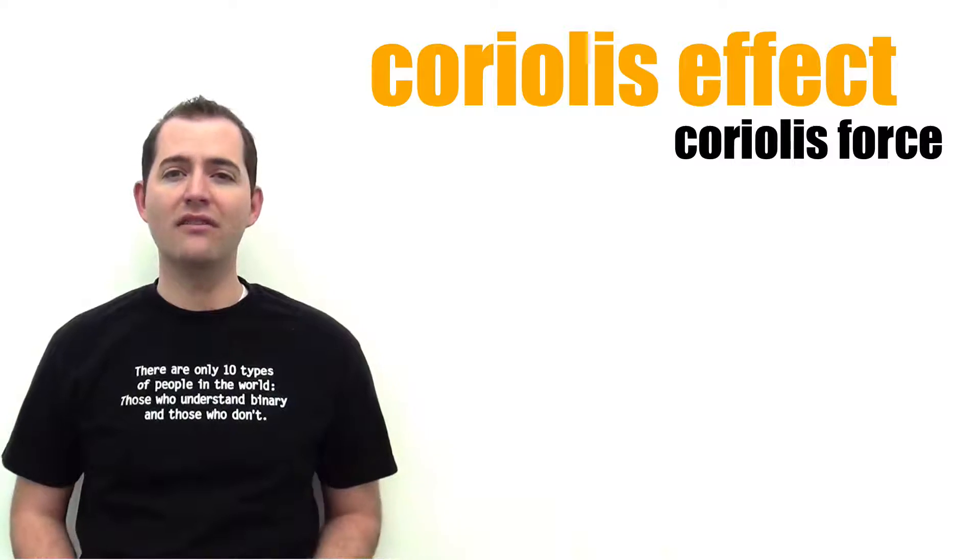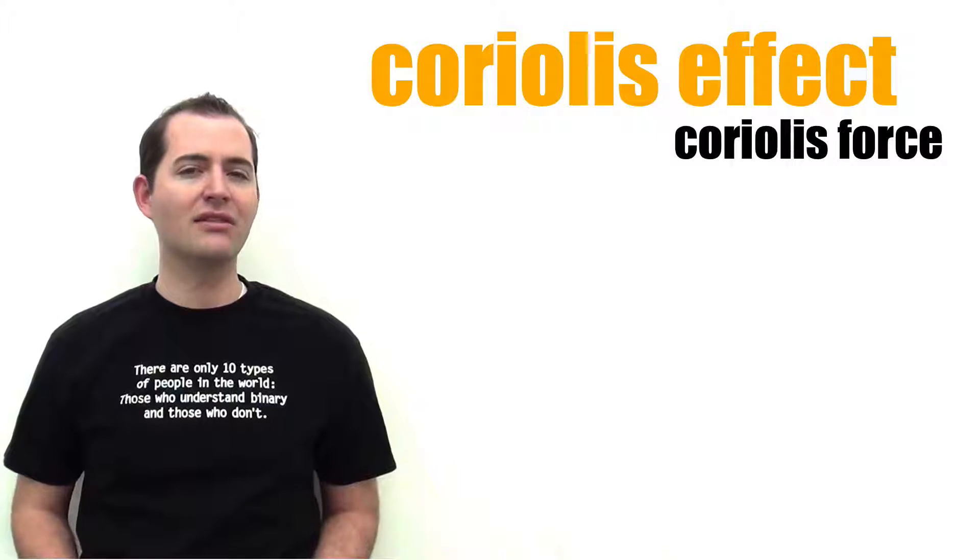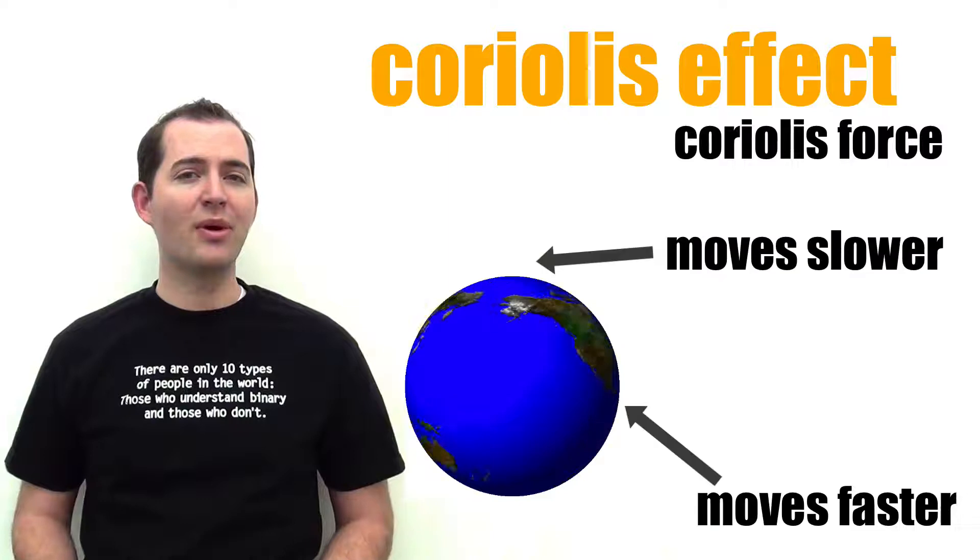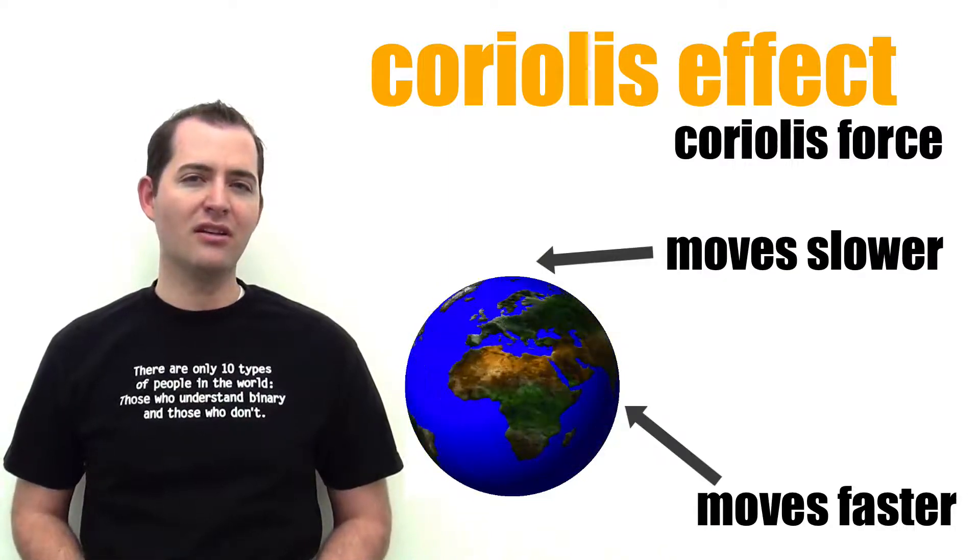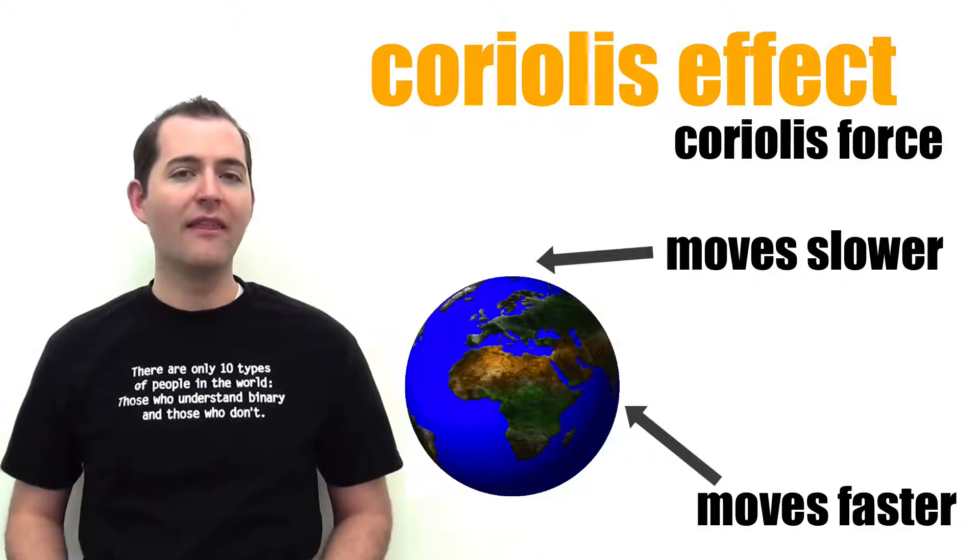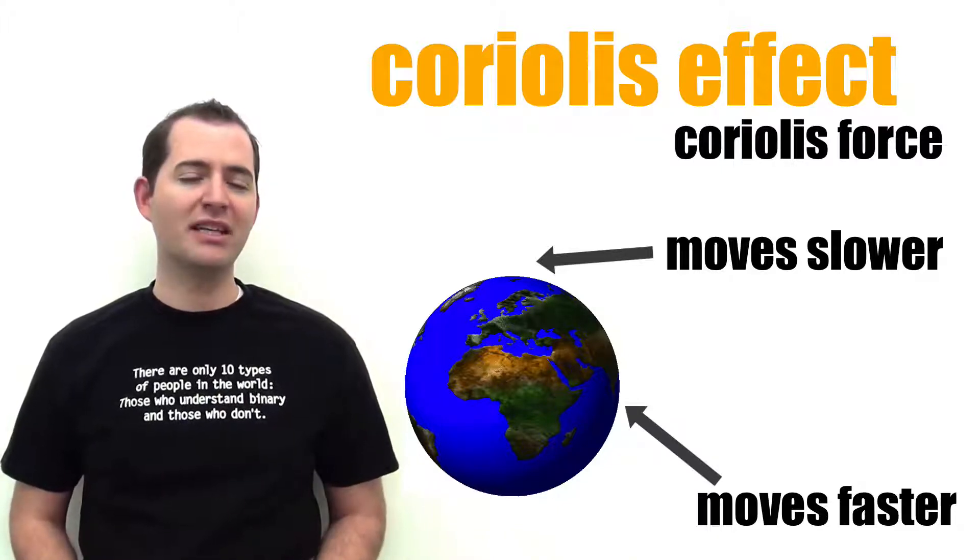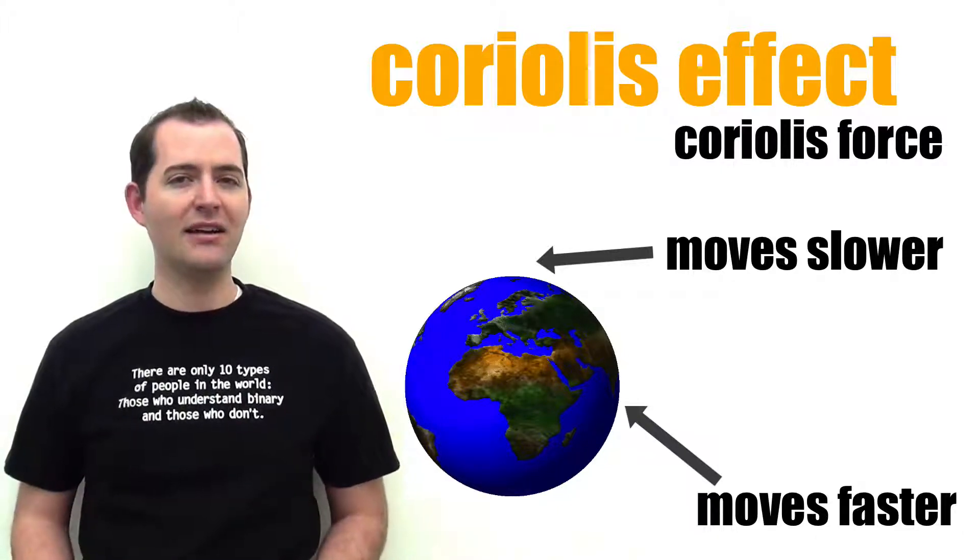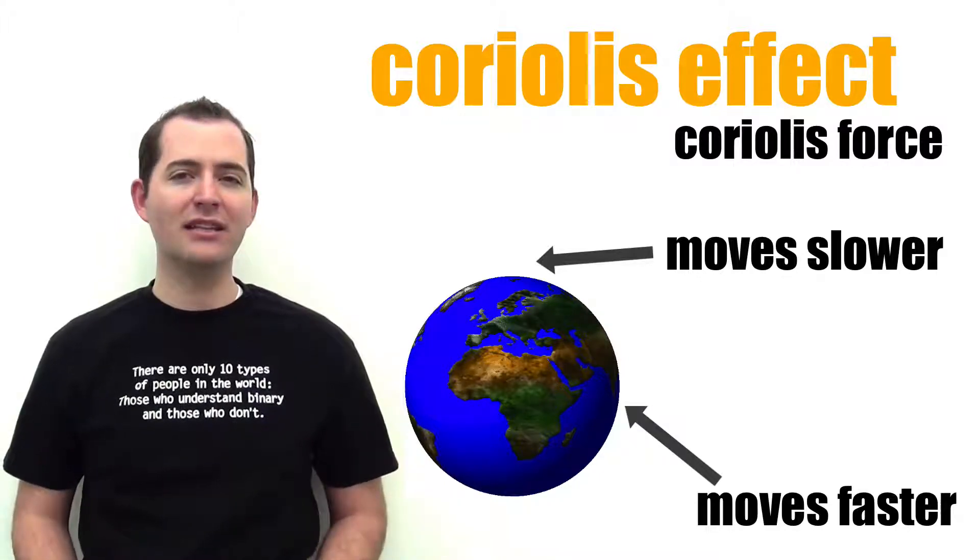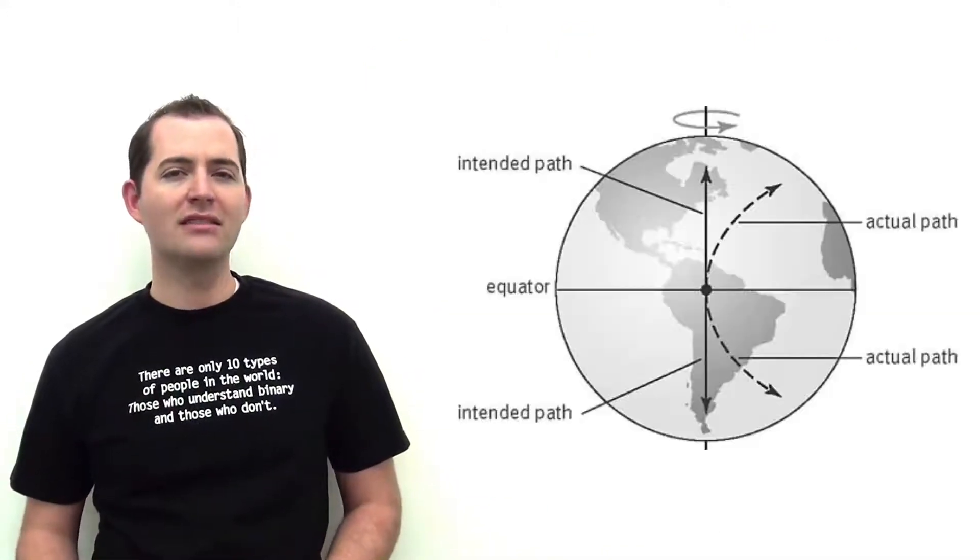The Coriolis effect is caused by the rotation of the Earth and, more specifically, that the Earth has to rotate faster around its equator than at its poles. This is because points near the equator have farther to travel in a 24-hour period than points closer to the poles. This explains the differences in rotational speeds at the equator compared to the poles, which impacts wind direction in the northern and southern hemispheres.